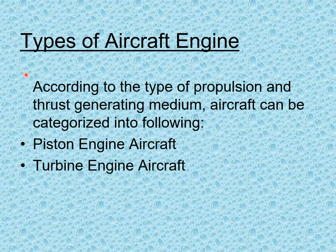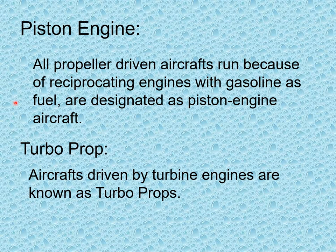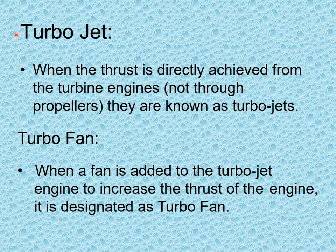Types of aircraft engines: Piston engine aircraft are all propeller-driven aircraft running on reciprocating engines with gasoline as fuel. Turbo-prop aircraft are driven by turbine engines. Turbojet aircraft achieve thrust directly from turbine engines, not through a propeller. Turbofan is an improved version of the turbojet where a fan is added to increase thrust.